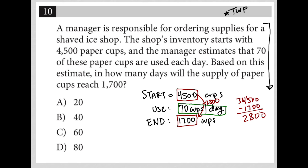Well, that will be 2,800 divided by 70, which is equal to 40.